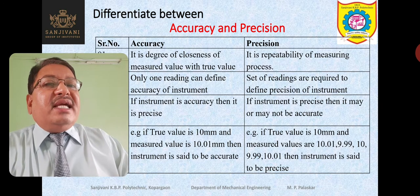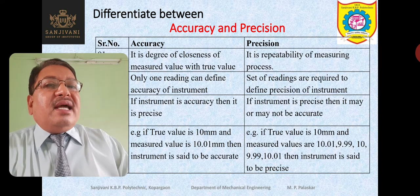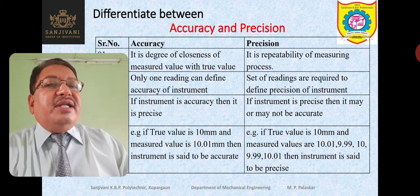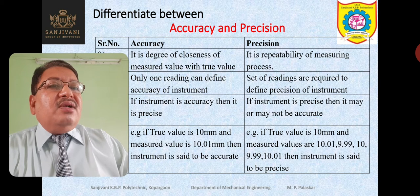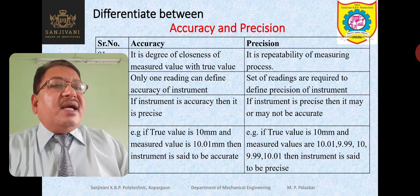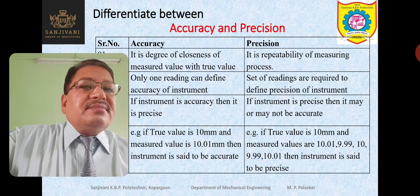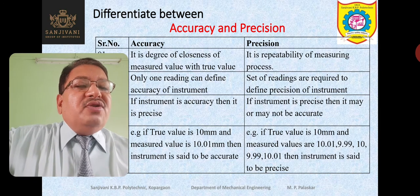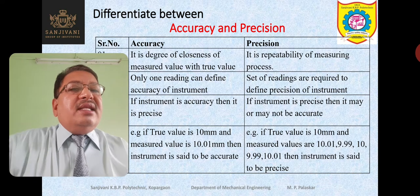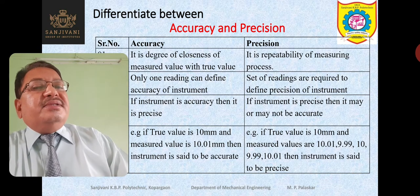For example, if true value is 10 mm and measured value is 10.01 mm, then the instrument is said to be accurate. But if the true value is 10.01 mm and measured values are 10.01, 9.99, 10, or 9.99, 10.01, then the instrument is said to be precise. Thank you very much.